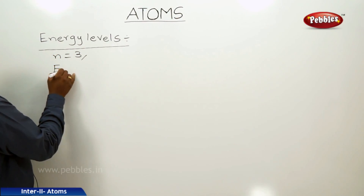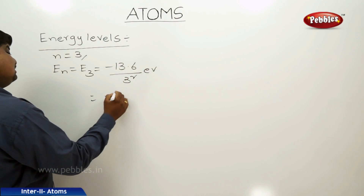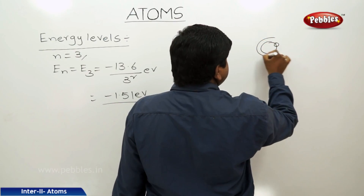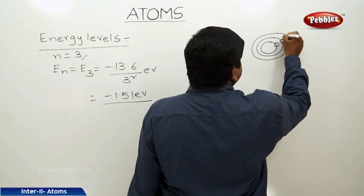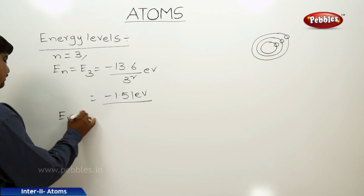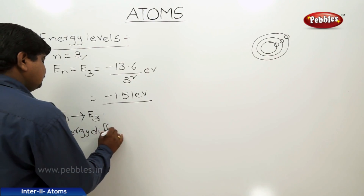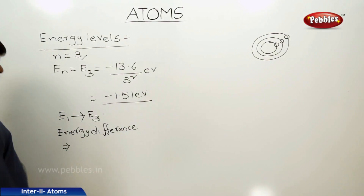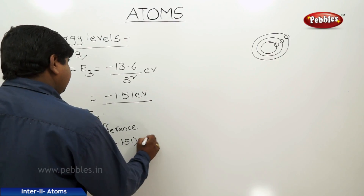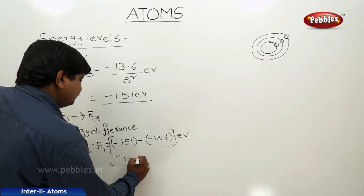For n equal to 3, E3 is equal to minus 13.6 divided by 3 squared eV, which is approximately equal to minus 1.51 eV. E1 is the ground state, E2 is the first excited state, and E3 is the second excited state. If the electron jumps from the ground state to the second excited state, the energy difference E3 minus E1 is approximately equal to 12.09 eV.